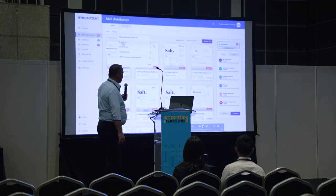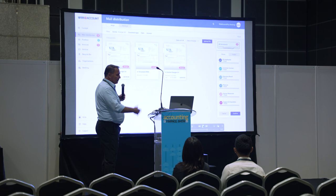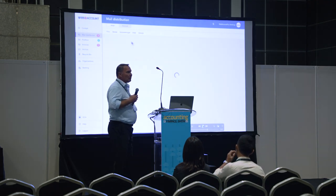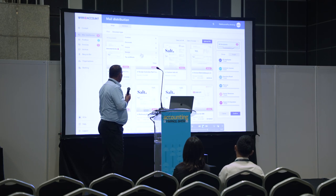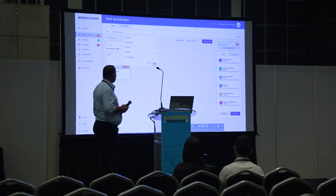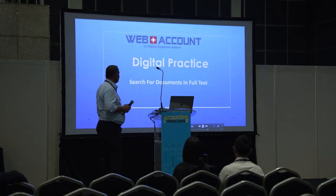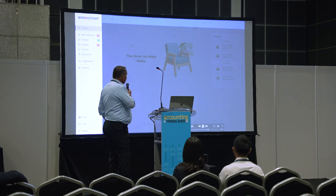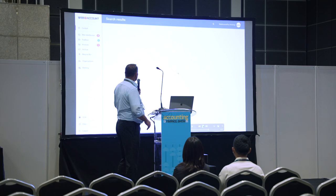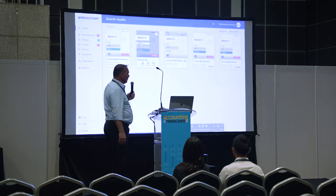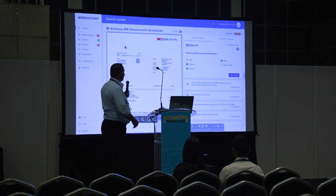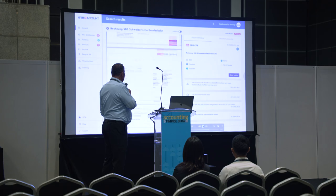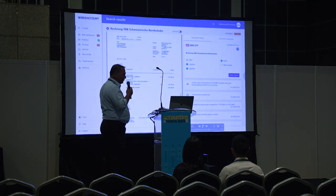You have the possibility to filter all documents on certain criteria, for example who the sender is, what date range, what tax needs to be applied, or the amount if considering invoices. We even have the possibility to search in full text, because sometimes you don't know what tags have been applied. For example, searching for 'Good Shine' which is a credit note — the system looks up documents which have this expression in them and finds it.